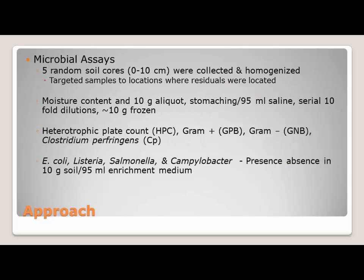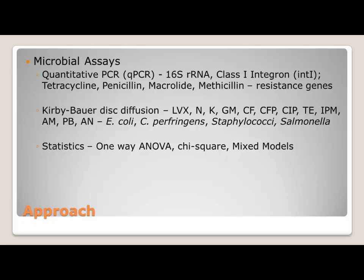For microbial assays, we looked at heterotrophic plate count bacteria (HPCs), gram-positive bacteria, gram-negative bacteria, and Clostridium perfringens — all culture methods. We did some presence-absence work for E. coli, Listeria, Salmonella, and Campylobacter, in 10 grams of soil. We were generally expecting not to detect very many of these. For molecular assays, we used quantitative PCR to detect 16S ribosomal RNA and class I integron genes. We also used the Kirby-Bauer disk diffusion approach to develop antibiograms — I'm only going to talk about E. coli antibiograms today, but we're also working on Clostridium, Staphylococcus, and Salmonella antibiograms.